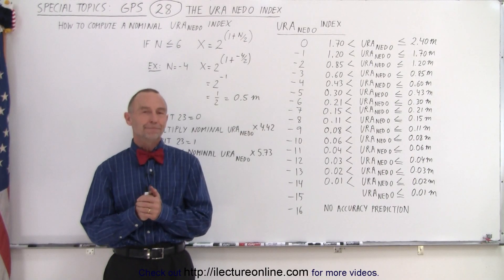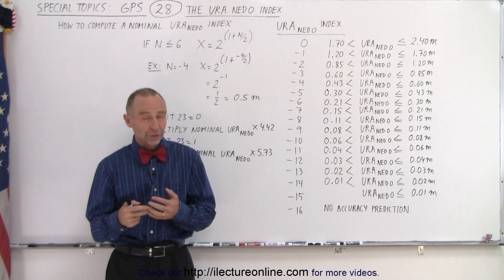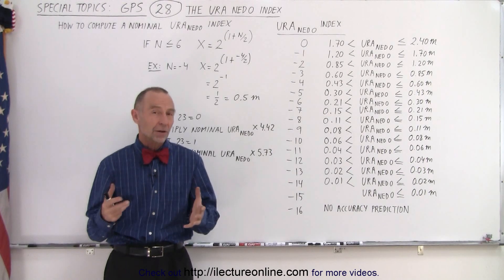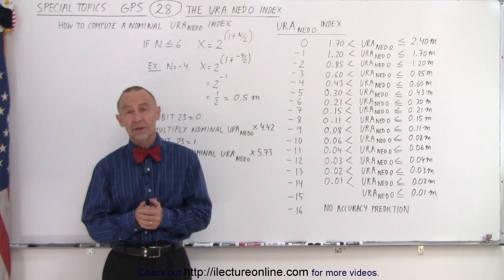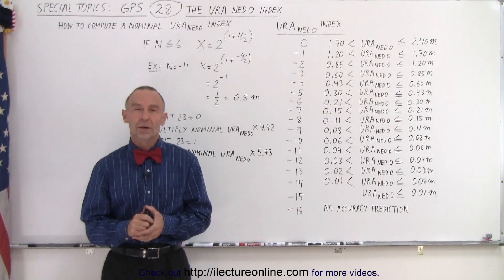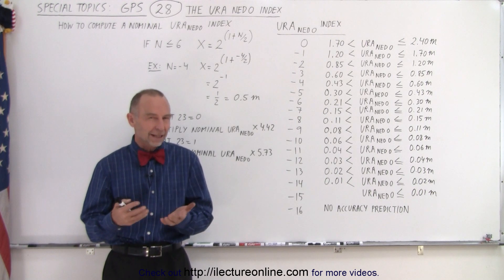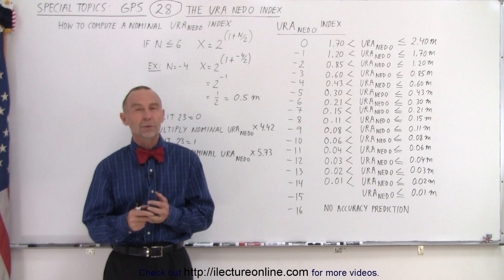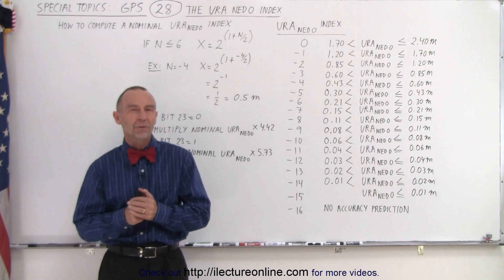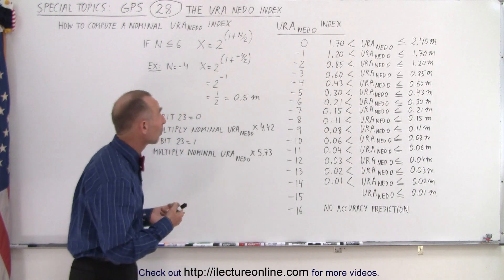Welcome to iLectureOnline. In the previous video you might have wondered why the potential errors in range could be so large, and yes, they could be that large. But in typical applications and with more modern satellites and more modern equipment, we can do much better than that. So we had to adapt and we came up with what we call the URA NED zero index.